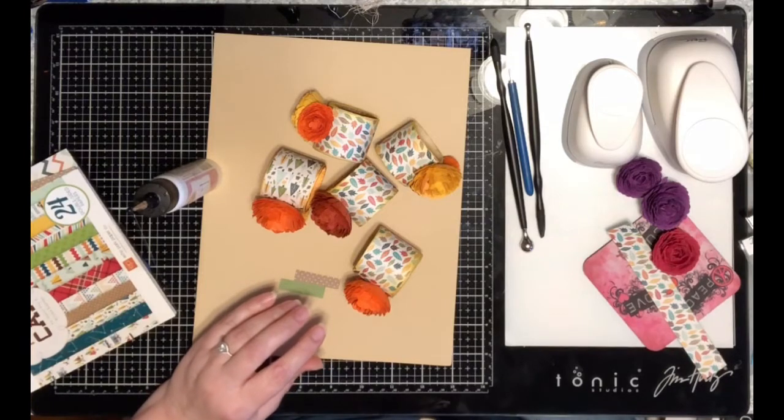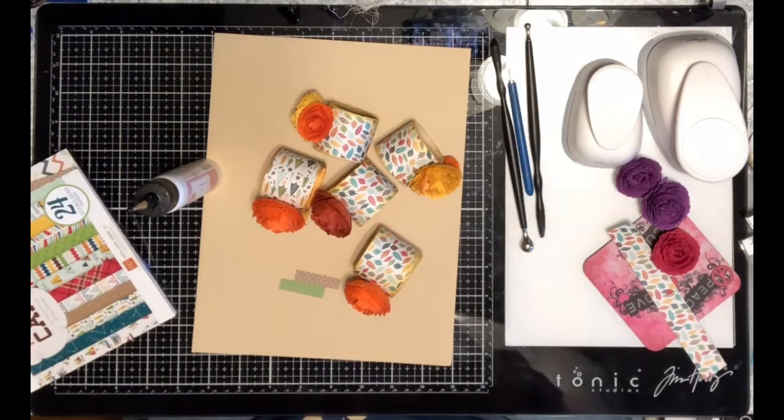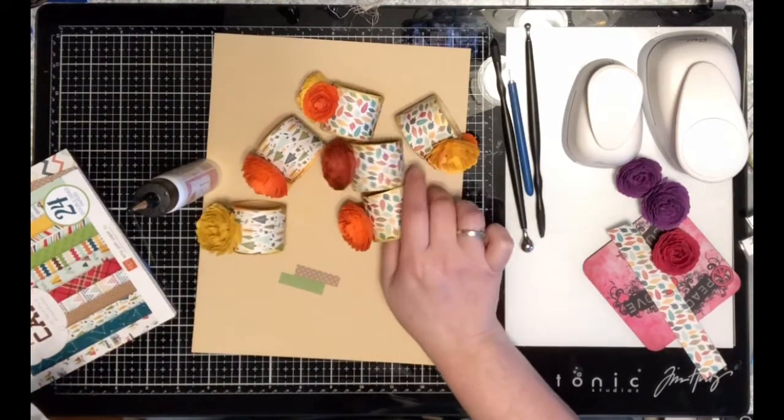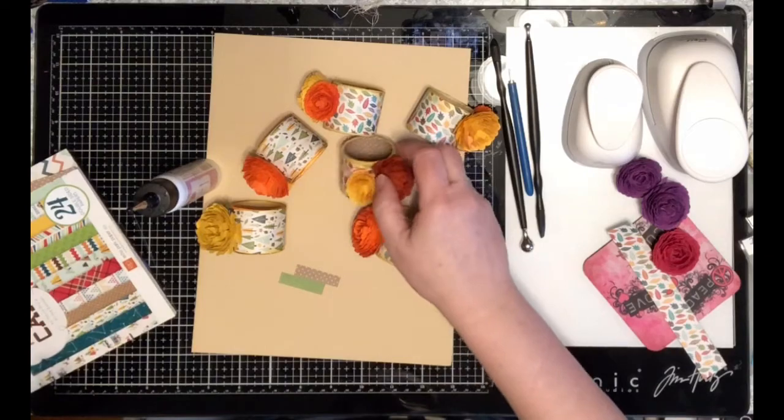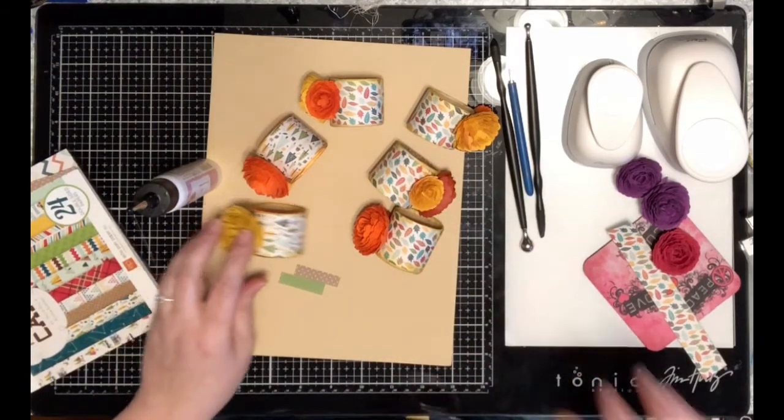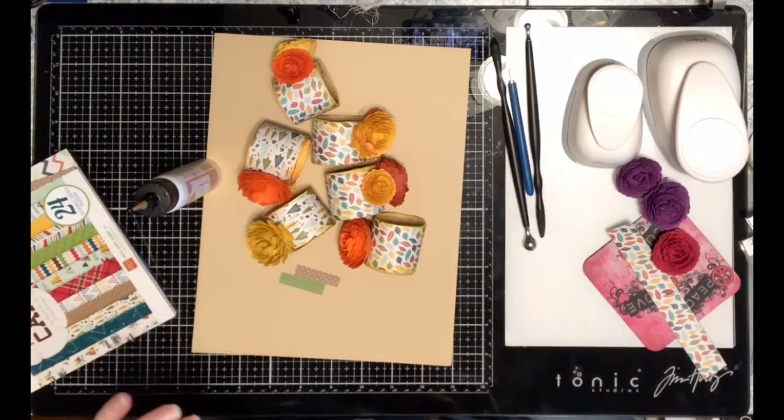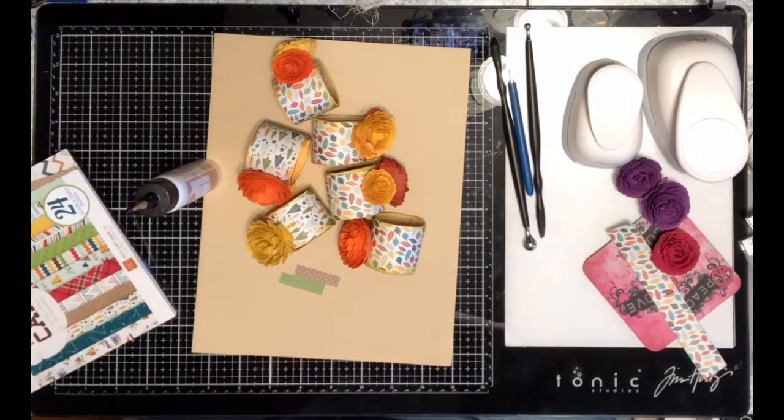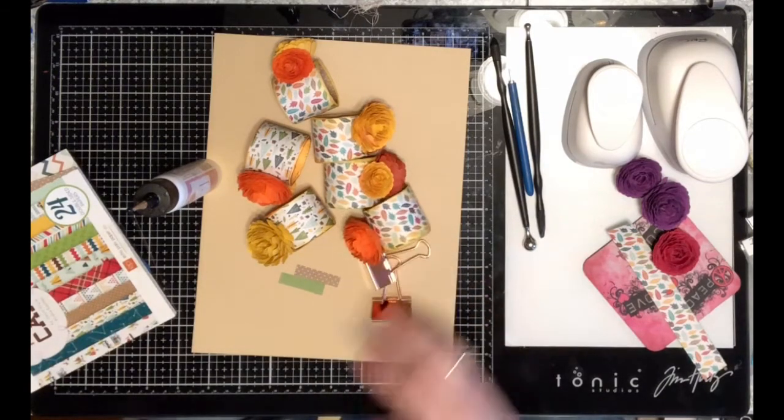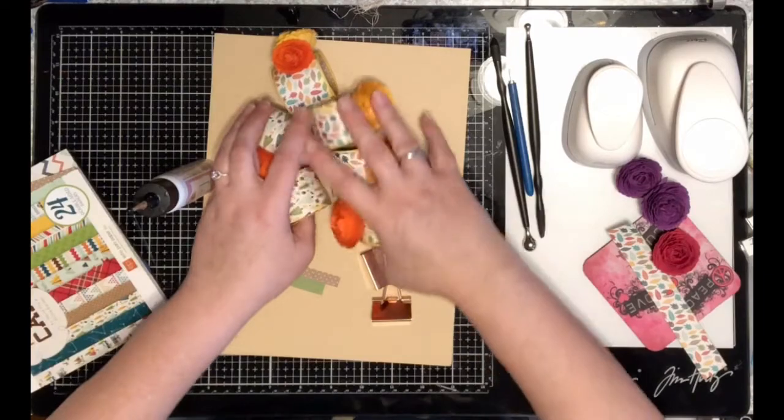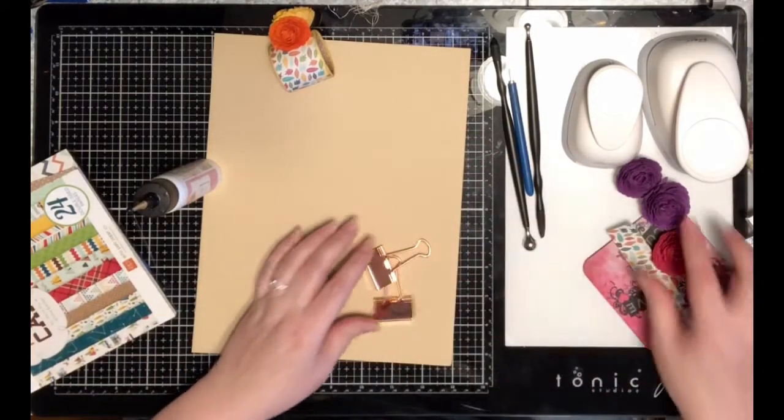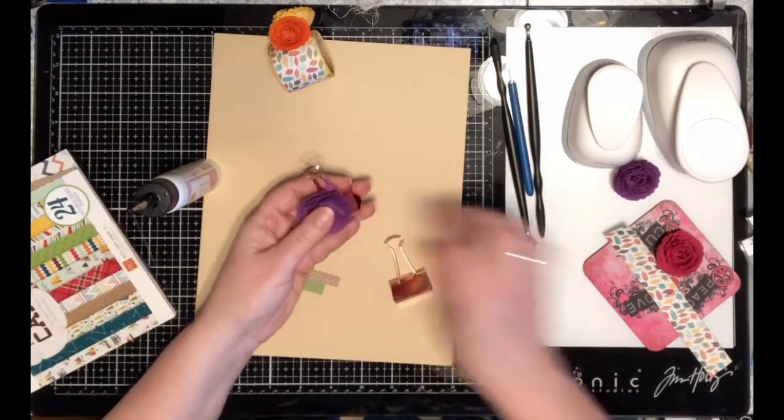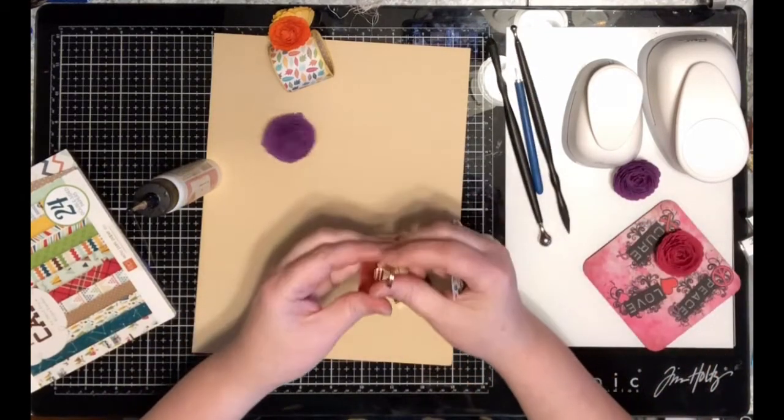These rolls are actually from my Cricut vinyl, leftover from that, and so they turned out really cute. Another thing that you can do with these is I have some binder clips, and you can put your flowers on the binder clips.